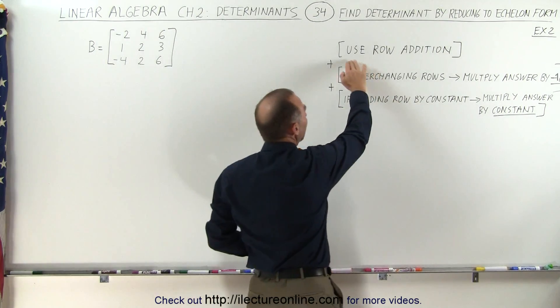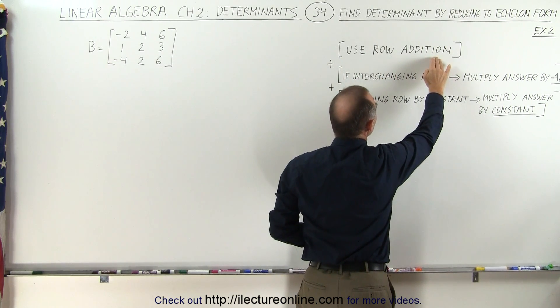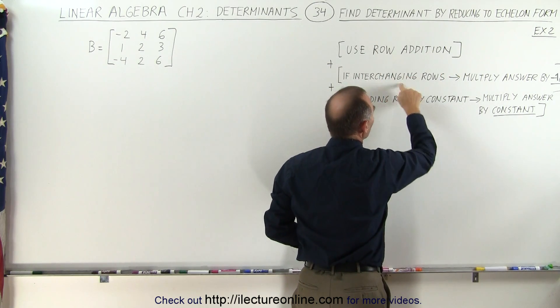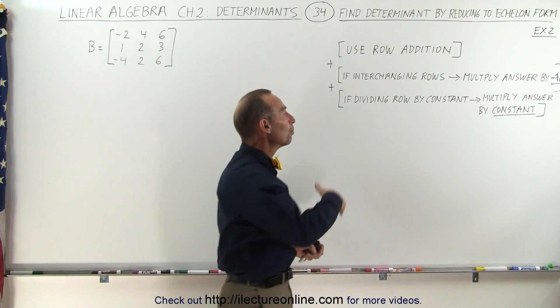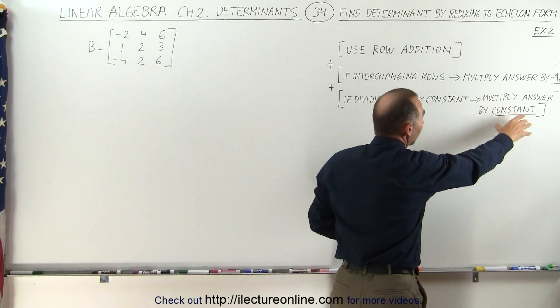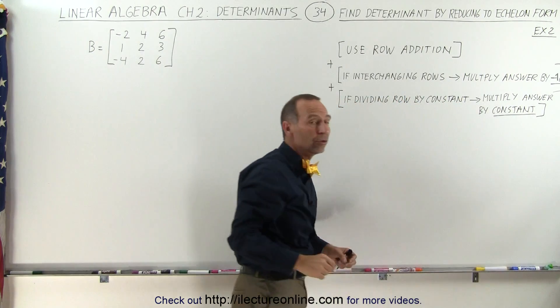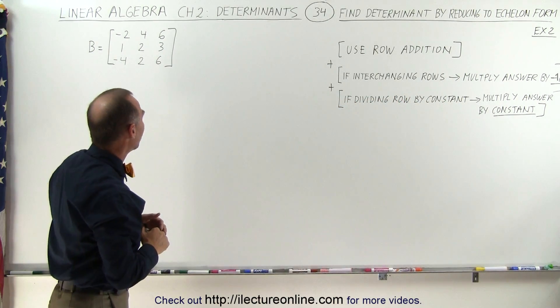And of course, we don't have to make any adjustments to the answer when we do row additions, but we do have to make adjustments to the answer, either by multiplying the answer by negative 1 or multiplying or dividing the answer by that constant that we used in the reduction to echelon form.